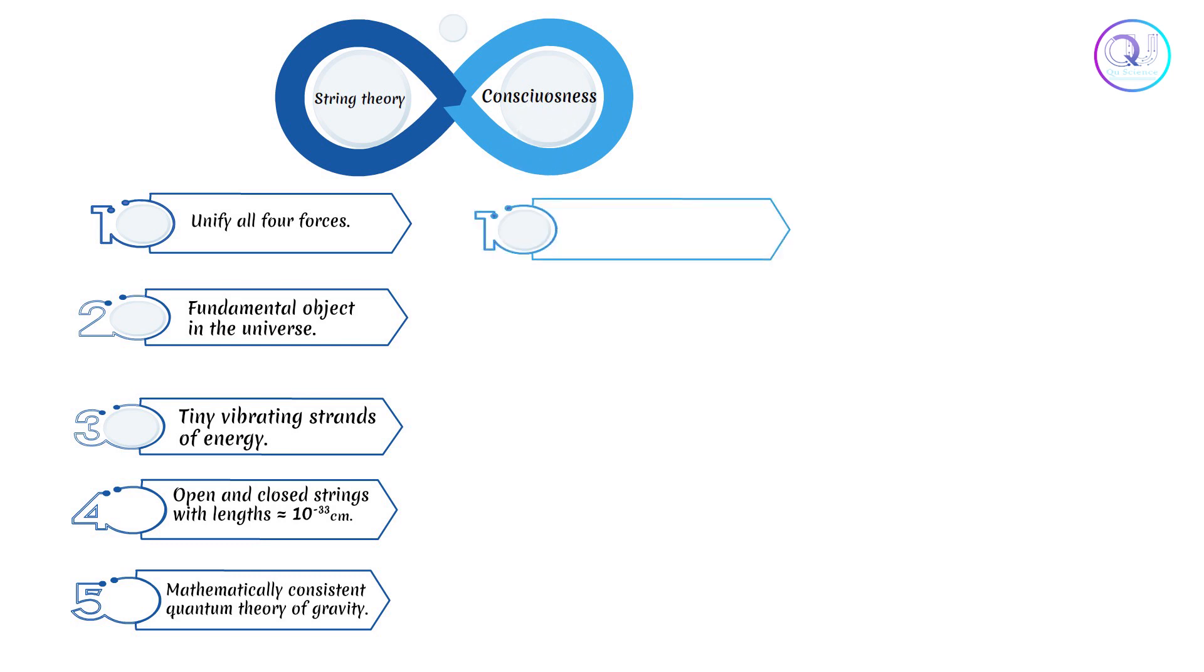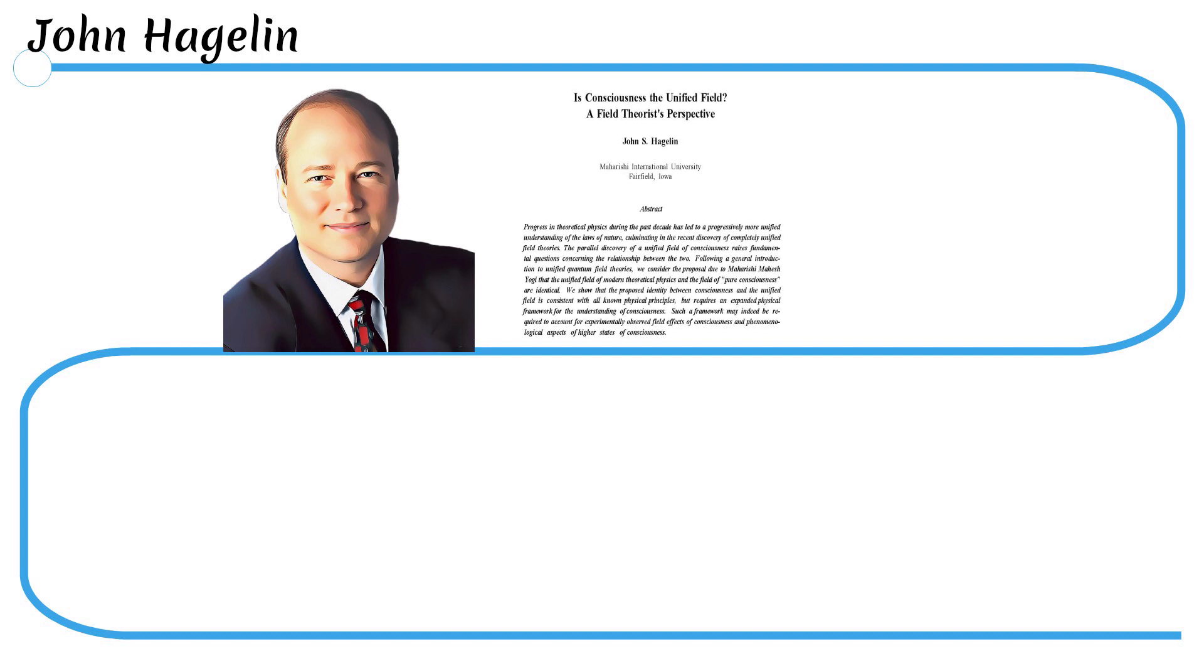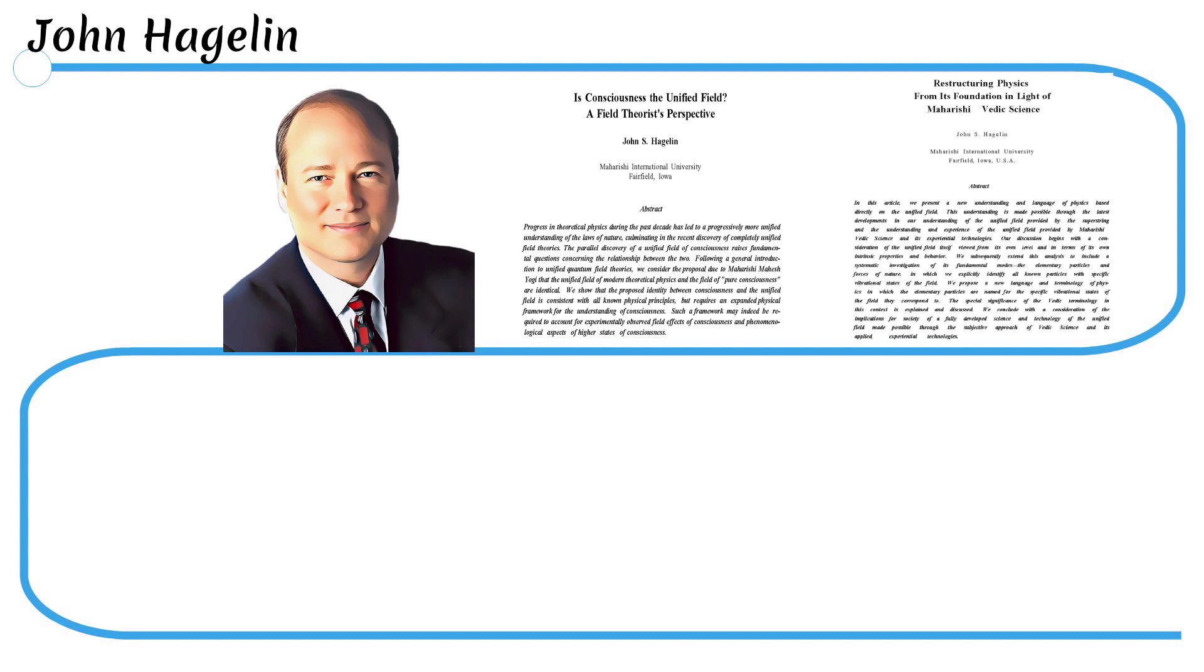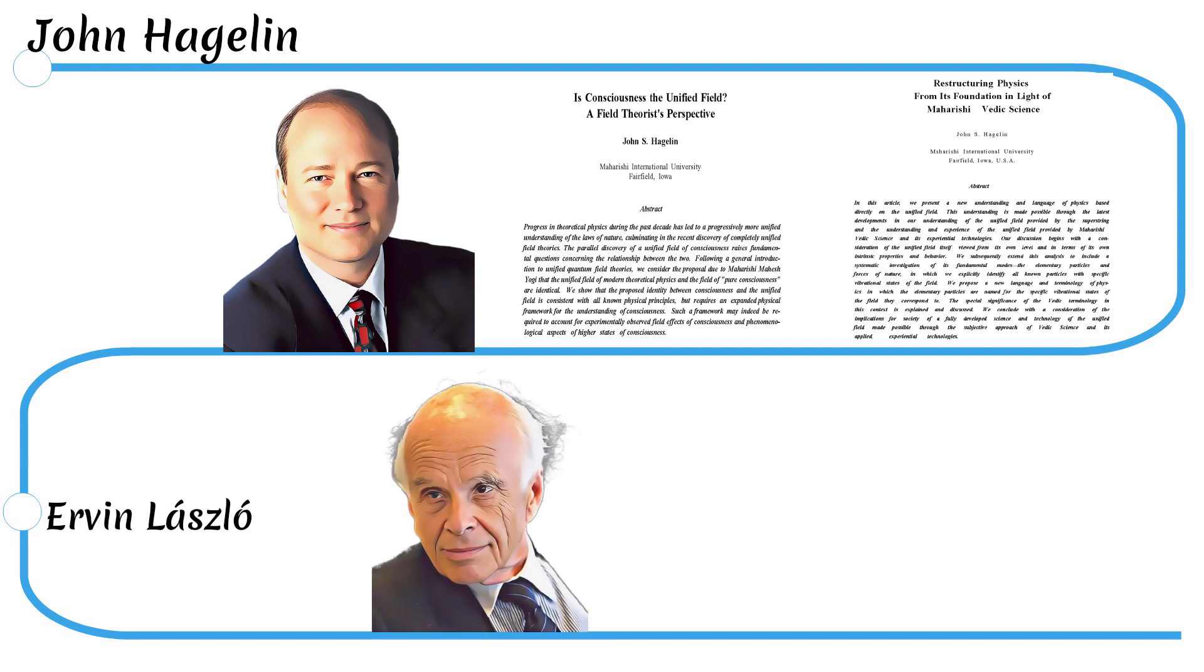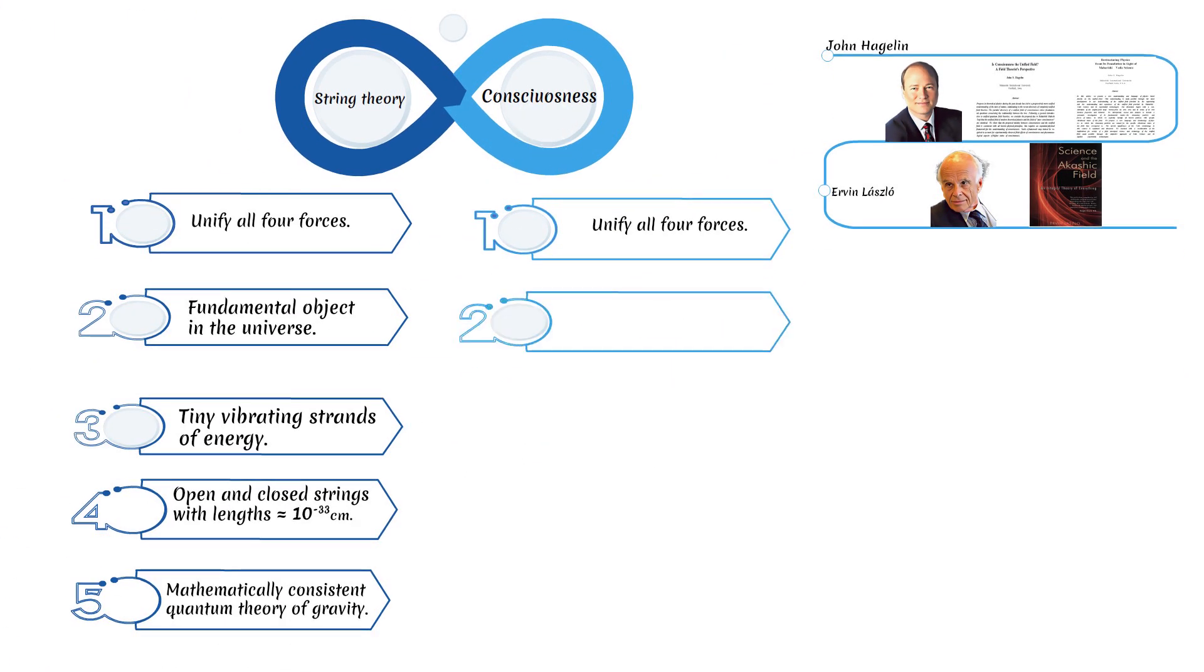On the other side of the coin, let us review three aspects of consciousness theory. The first aspect: consciousness theory also attempts to unify all four forces. We have just mentioned two attempts, beginning with Hagelin, who published two papers on his hypothesis. The first is titled 'Is Consciousness the Unified Field?' The second is 'Restructuring Physics from its Foundation in Light of Maharishi Vedic Science.' The second attempt was with Laszlo in his book 'Science and the Akashic Field: An Integral Theory of Everything.'